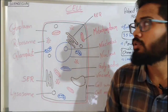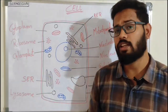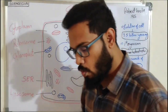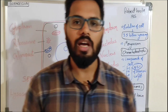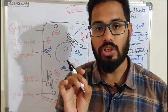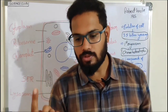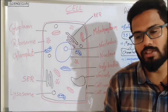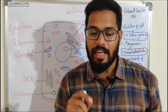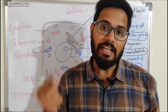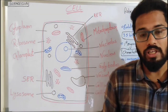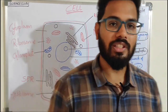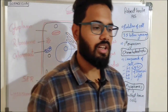Hello friends, welcome to Science Club. Today we are going to discuss the topic: cell. What is a cell? A cell is the smallest basic unit of life that is responsible for all of its life processes. A cell can replicate itself independently, so it is known as the building block of life.